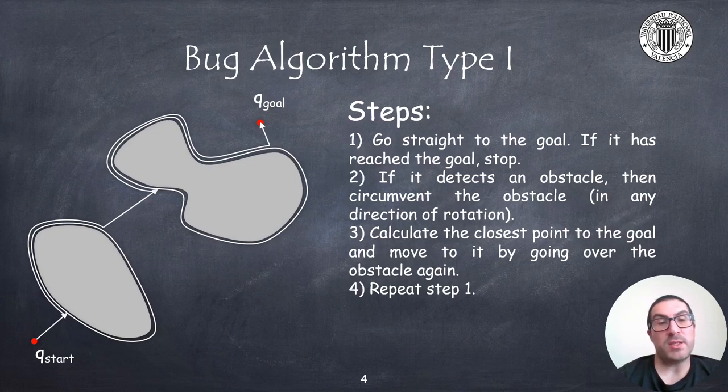In the worst case, the robot will travel half of the perimeter again. Then step 1 will be repeated trying to reach the goal. In each situation, the robot will be gradually approaching the goal.